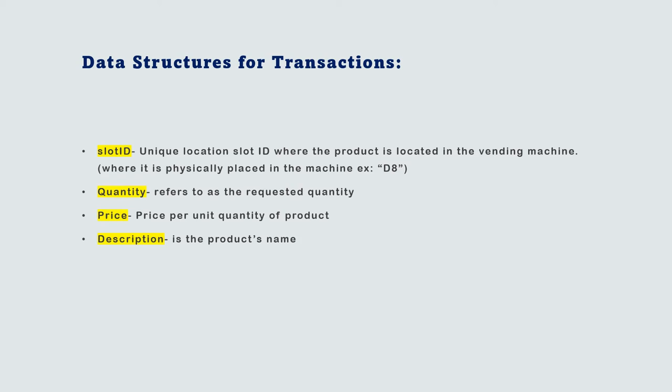In the data structure for transactions, we see a Slot ID where the vending machine recognizes the slot and product, and gives the customer a sign of where the product is located in the machine. Quantity refers to the requested quantity. Price is the price per unit for the given quantity. Description gives the product description.